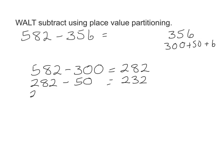Taking our 232, we'll do the final piece of our subtraction, which is to take away the 6. That gives us a final total of 226. So here you can see that we have subtracted the hundreds first, then the tens, and finally the ones, to reach our final total of 226. That is what's meant by subtracting using place value partitioning.